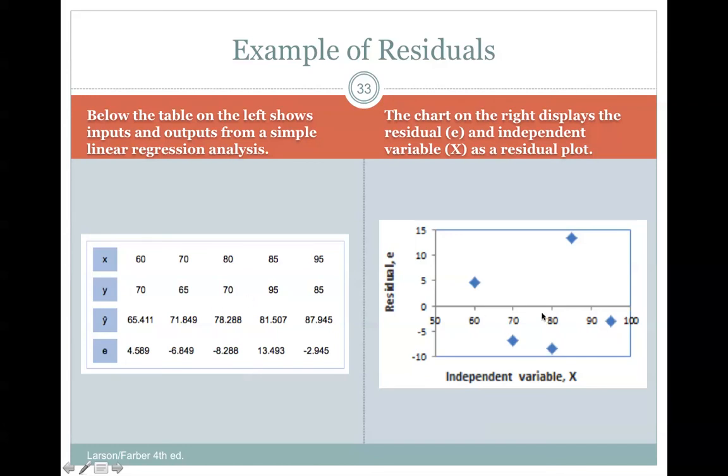95 minus 81, we get a positive 13. It's further away from the line and it's above it. And then back down pretty much the closest point, so the line must go somewhere like this, is 85 minus 87, which just means that dot is a little bit below the line.